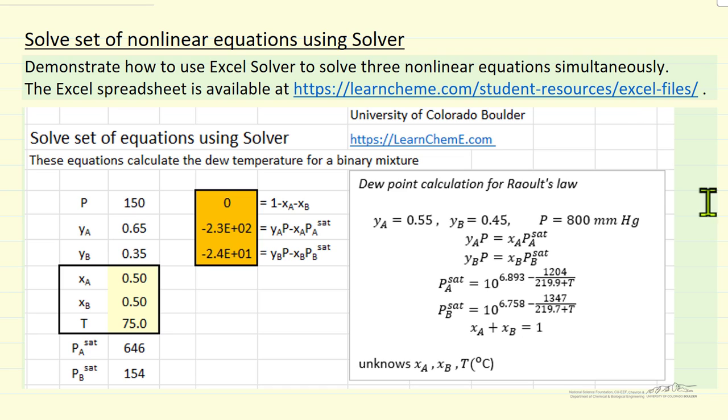So we're solving three equations. This is the first one, YB times pressure, the second one, and the third one. And the way we're going to solve it is to write the equations like I've indicated in these cells here, where we bring everything to the right side of the equation, so the left side should be zero.